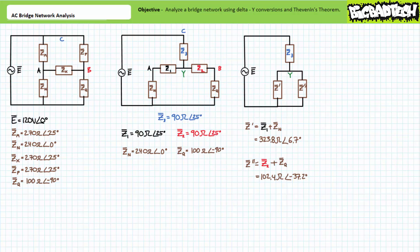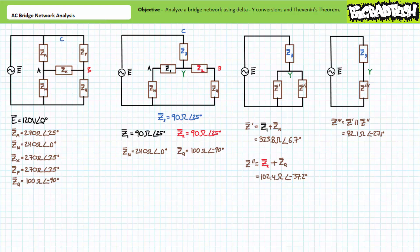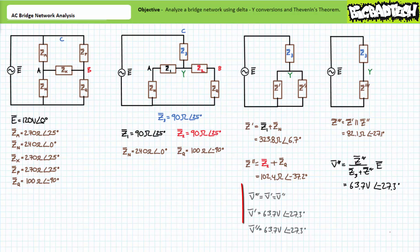Although we've simplified the circuit, we've lost direct access to nodes A and B — node A is internal to Z-single-prime and node B is internal to Z-double-prime. Z-single-prime and Z-double-prime are in parallel, a simplification called Z-triple-prime, with a value of 82.1 ohms at negative 27.1 degrees. Z-triple-prime is in series with Z3 — a perfect setup for the voltage divider rule. Applying the voltage divider rule gives V-triple-prime as 63.7 volts at negative 27.3 degrees. Since V-triple-prime is the parallel combination, V-single-prime and V-double-prime are also both 63.7 volts at negative 27.3 degrees.